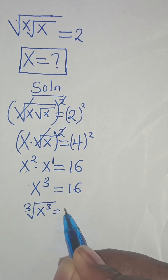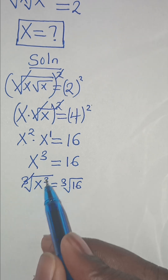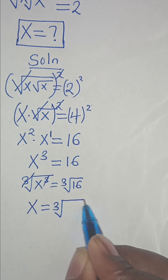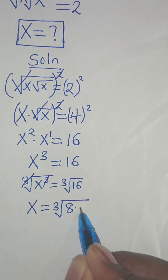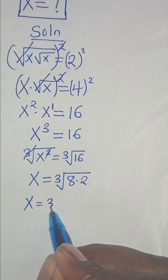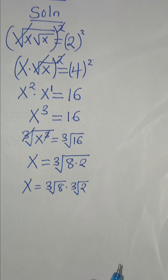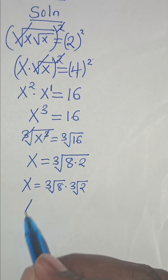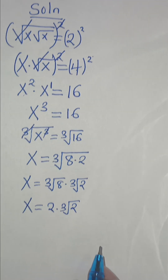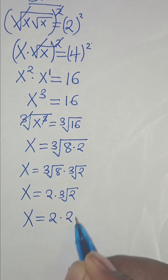To solve for x, we introduce a cube root on both sides, eliminating the cube on the left. So x equals the cube root of 16, which we express as the cube root of 8 times 2. This means x equals the cube root of 8 multiplied by the cube root of 2, and since the cube root of 8 is 2, x equals 2 times the cube root of 2.